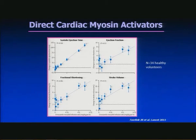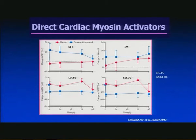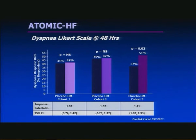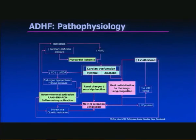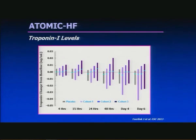Early trials in 34 healthy volunteers showed increases in systolic ejection time, ejection fraction, fractional shortening, and stroke volume. A concurrent trial in mild heart failure showed improvements in systolic ejection time and stroke volume. The Phase 2 ATOMIC-AHF trial in 613 patients did not reach its primary endpoint of dyspnea reduction, but demonstrated greater dyspnea relief in the third cohort at the highest dose, which was associated with a modest increase in troponin. Development of this drug is continuing.